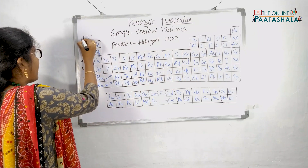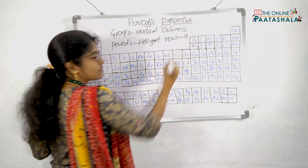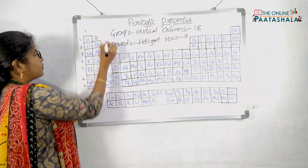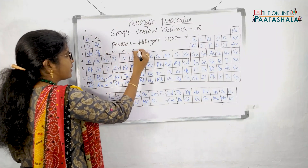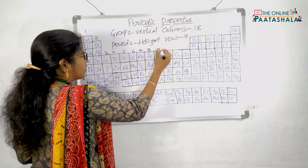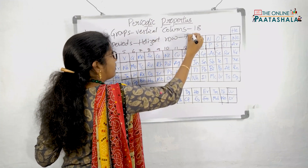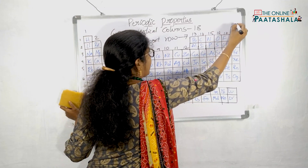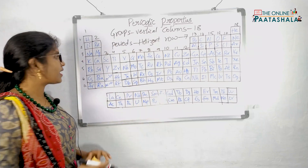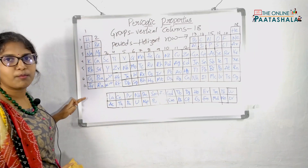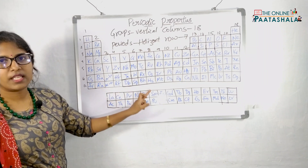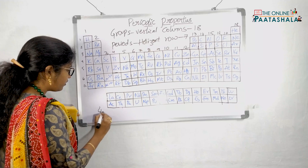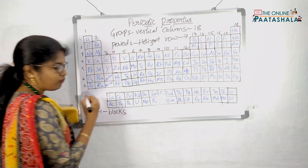In the whole periodic table, we have 7 periods and 18 groups — groups 1 through 18. Total 18 groups are there and 7 periods are there. These groups and the whole periodic table are divided into 4 blocks.